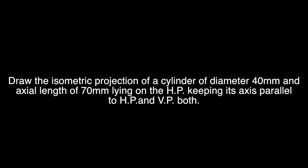So now we are doing example 21 NCERT Engineering Graphics 12th standard book, draw the isometric projection of a cylinder of diameter 40 mm and axis length of 70 mm